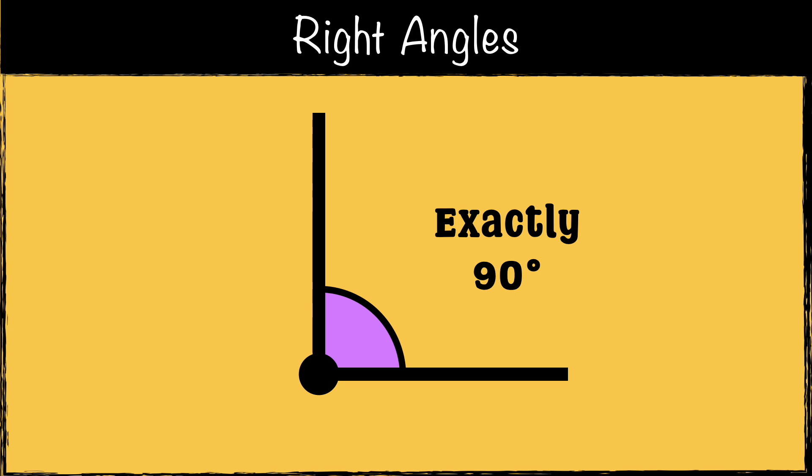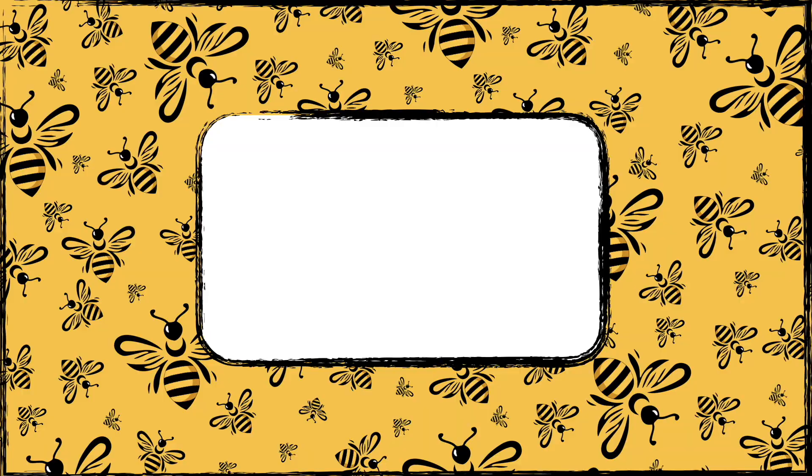Now let's have a look at right angles. A right angle is exactly 90 degrees. Instead of using a curved arc like other angles, we often show them with a small square in the corner. This makes it clear that the angle is exactly 90 degrees.